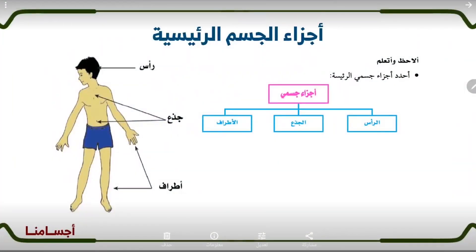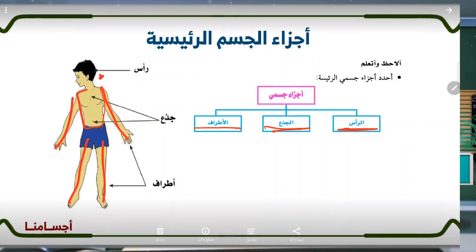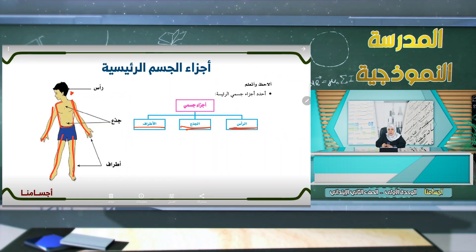أجزاء الجسم الرئيسية: ما هي أجزاء الجسم؟ أجزاء الجسم هي الرأس كما نرى في الصورة، والجذع، والأطراف. والأطراف هما اليدان والرجلان. أجزاء جسمي هي الرأس والجذع والأطراف.